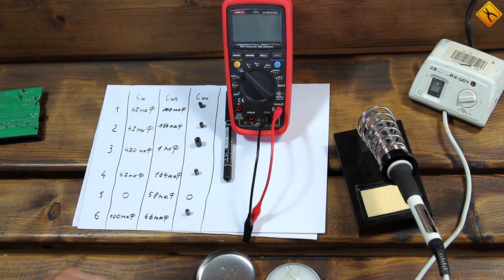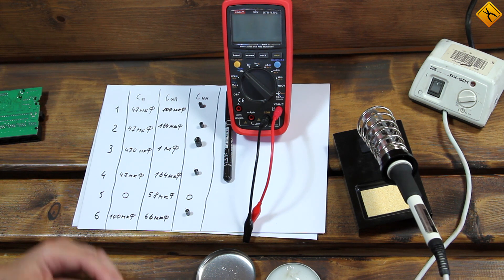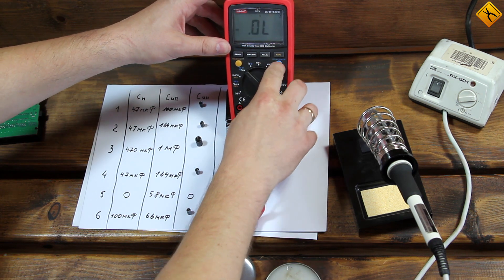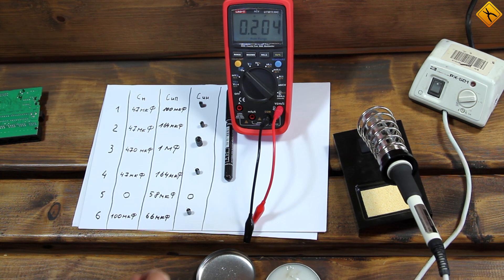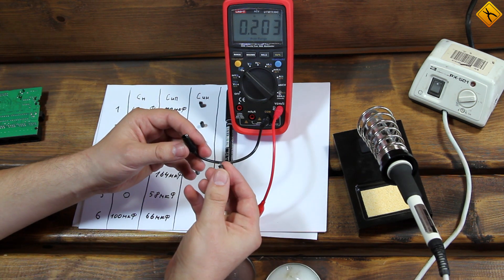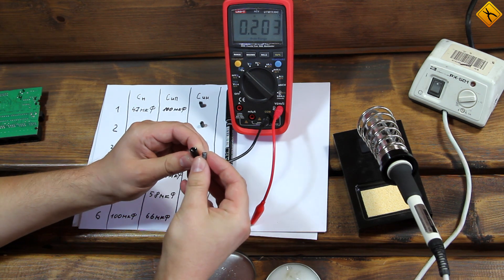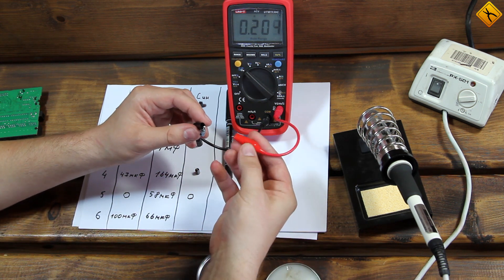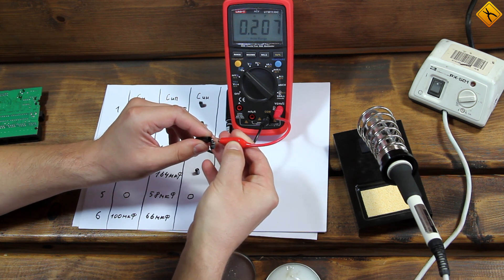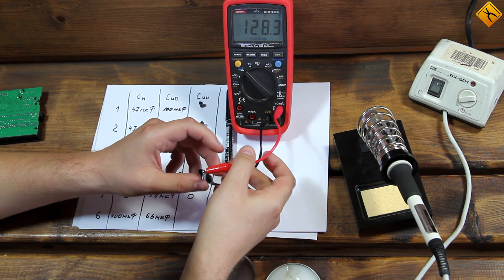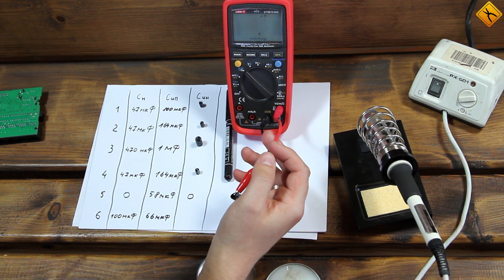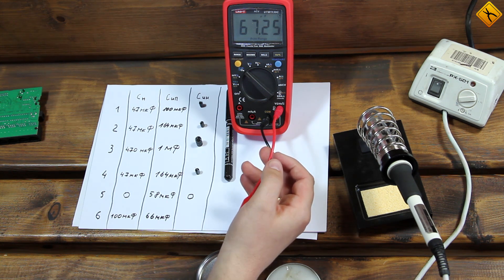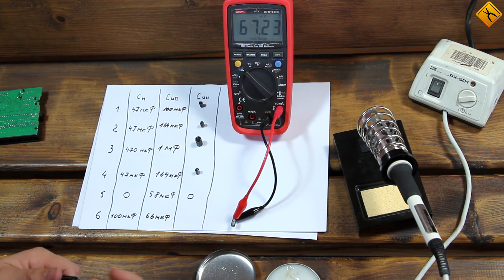So, I have desoldered the capacitors. Now, let's measure their actual capacitance. It looks like our multimeter has automatically switched off. We will use a different test lead this time, as the standard one is not convenient for this type of measurement. That's because the capacitor leads are short.